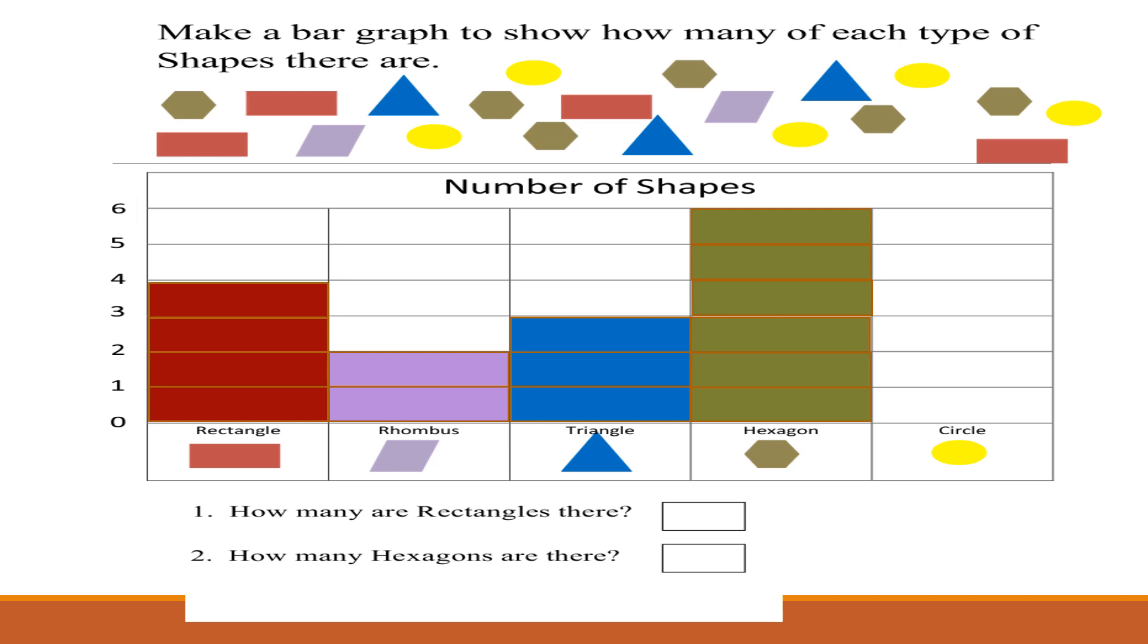It's time for the circle. 1, 2, 3, 4, 5. There are 5 circles. So we have to color 5 boxes. Well done.